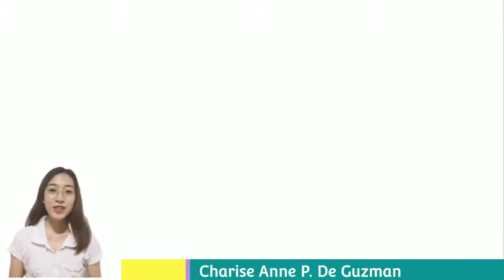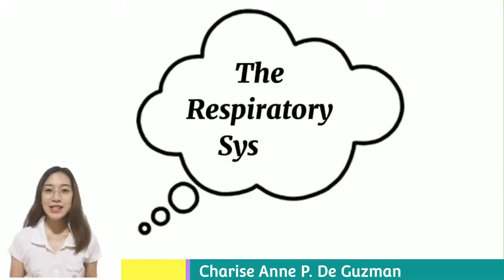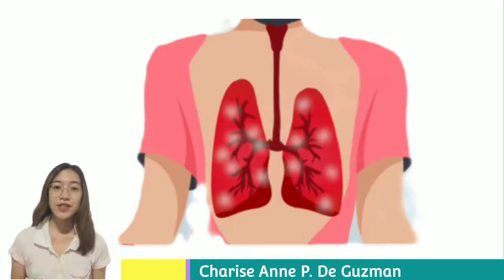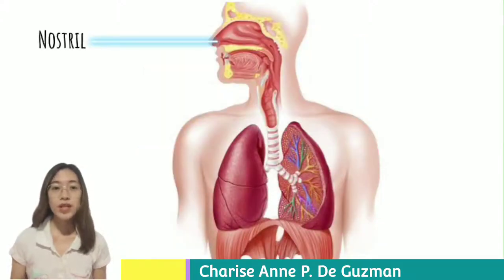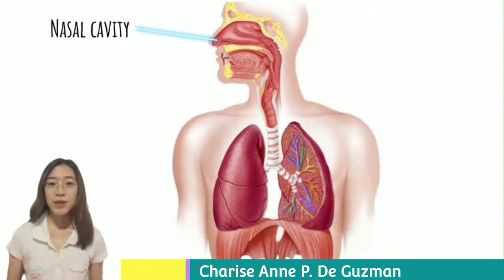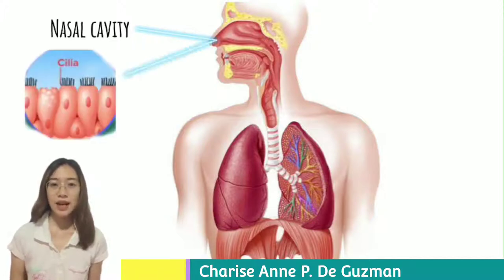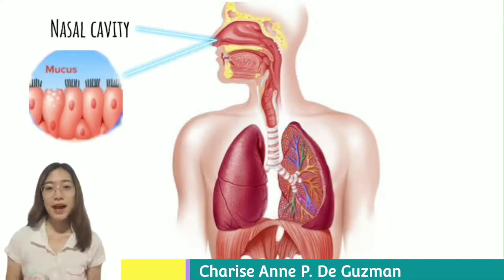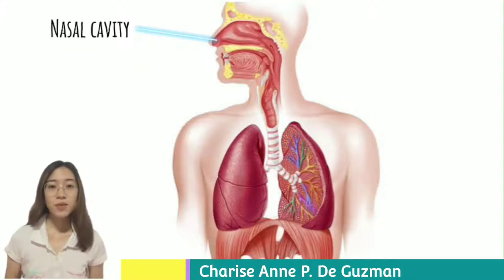For today's lesson, we will talk about the respiratory system. When we breathe, the air enters the human body through the nostrils, then passes through the nasal cavity. This air is filtered by specialized hair-like structures called cilia. The cells of the nasal cavity secrete mucus, which helps trap dust particles and blocks them from moving ahead. The nasal cavity also warms and adds moisture to the air.